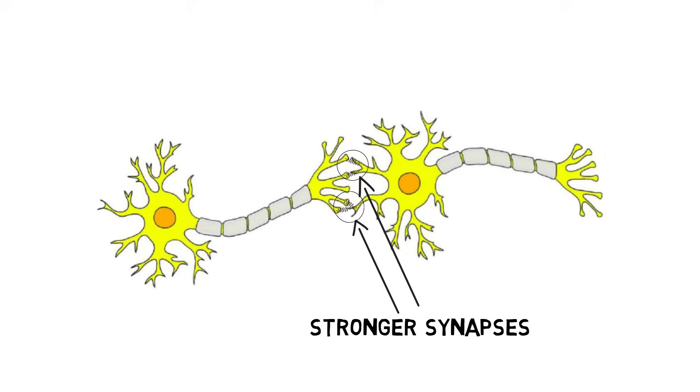This process is also associated with changes in gene transcription in the neuron, which can lead to the production of new receptors or modifications to the structure of the cell. These changes seem to be important for making the increased responsiveness of LTP long-lasting.